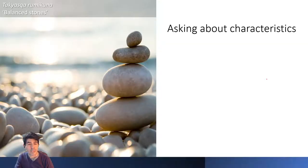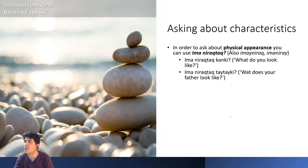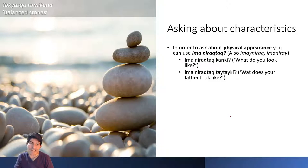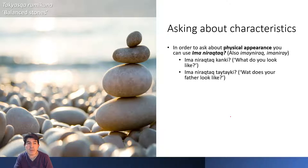Finally, to ask questions about what somebody looks like or how somebody is, there are two question types depending on focus. For physical appearance, you use 'Imanirachtah' or 'Imaniray' — meaning literally 'what is it/somebody like?' So 'Imanirachtah kanki' means 'what do you look like?' — useful when chatting with someone you can't see. 'Imanirachtah Taitaiki' means 'what does your father look like?'